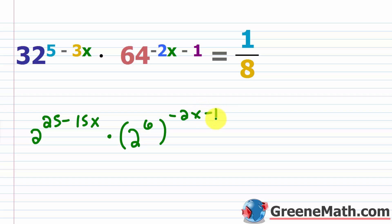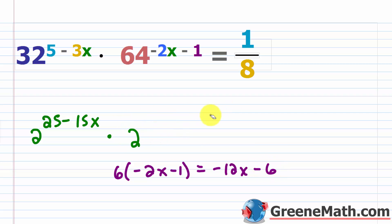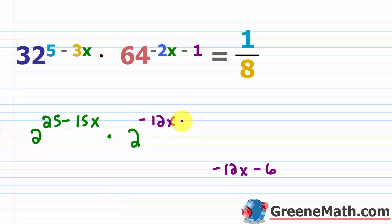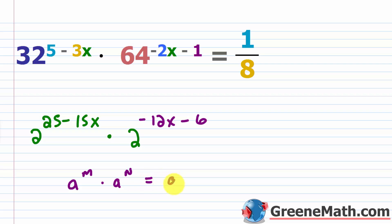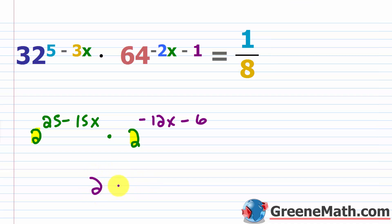For 64: rewrite as two to the sixth power raised to negative two x minus one. Power-to-power rule: six times negative two x is negative 12x, and six times negative one is minus six. So that exponent is negative 12x minus six. Now, since both sides of the left have base two and we're multiplying, we add exponents: negative 15x plus negative 12x is negative 27x, and 25 minus six is 19. So the left side simplifies to two to the power of negative 27x plus 19.